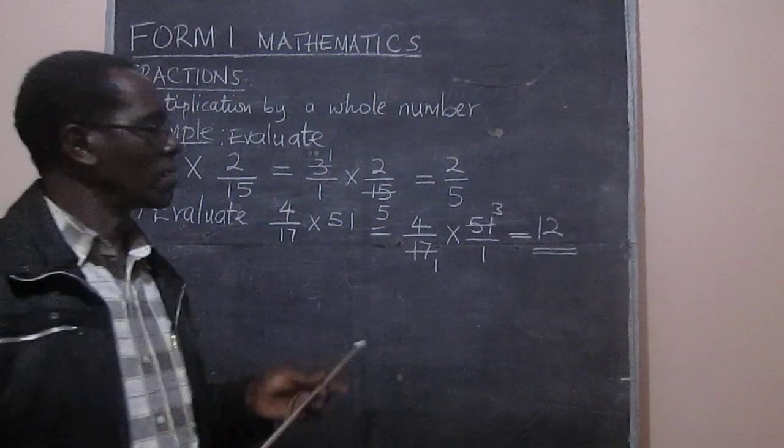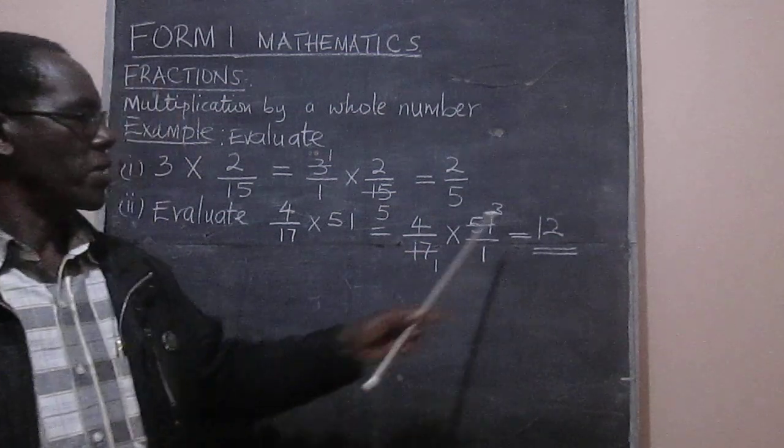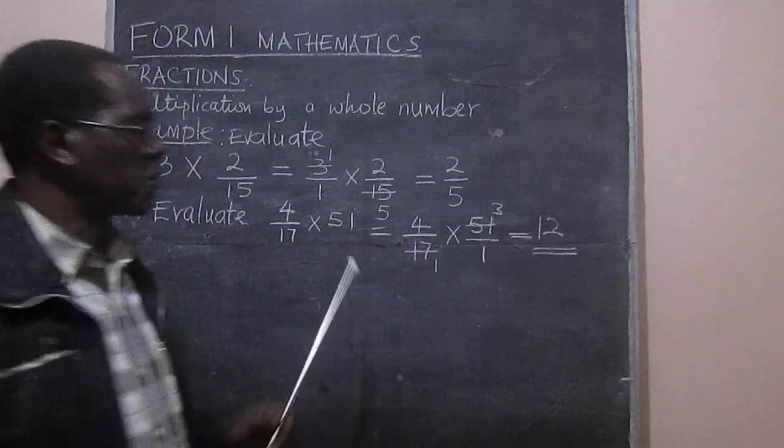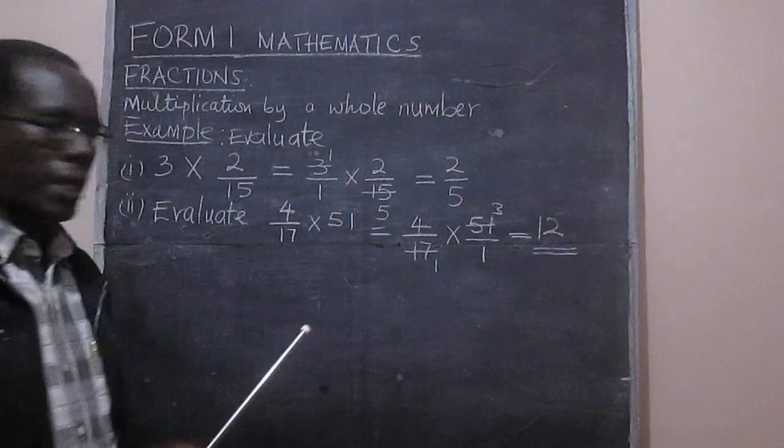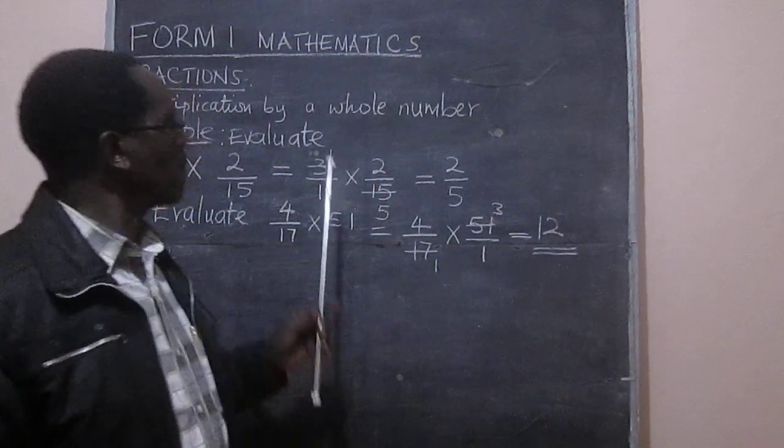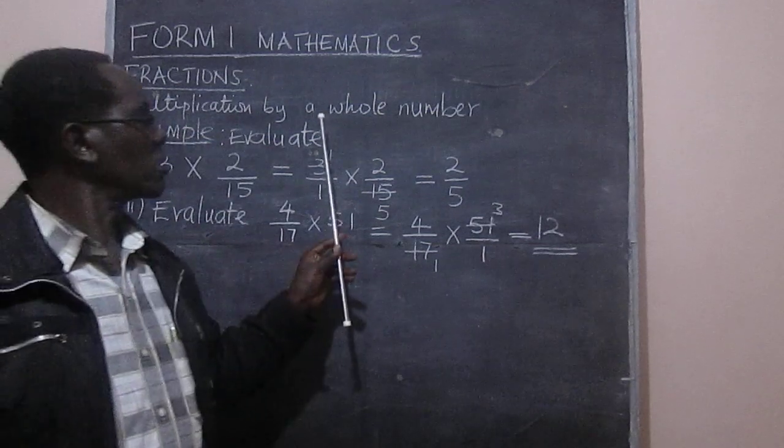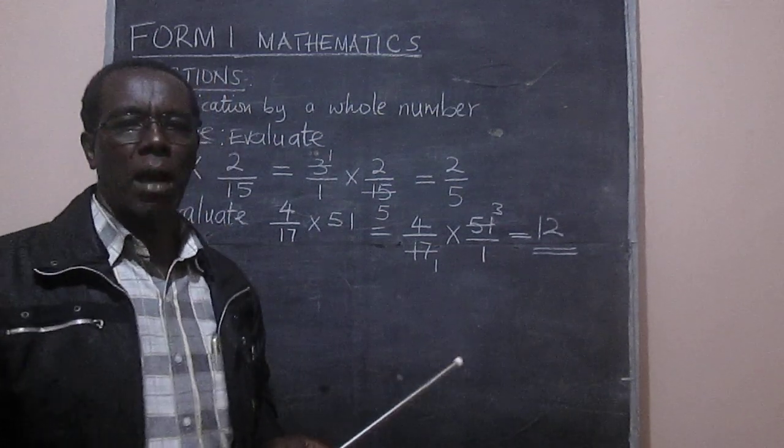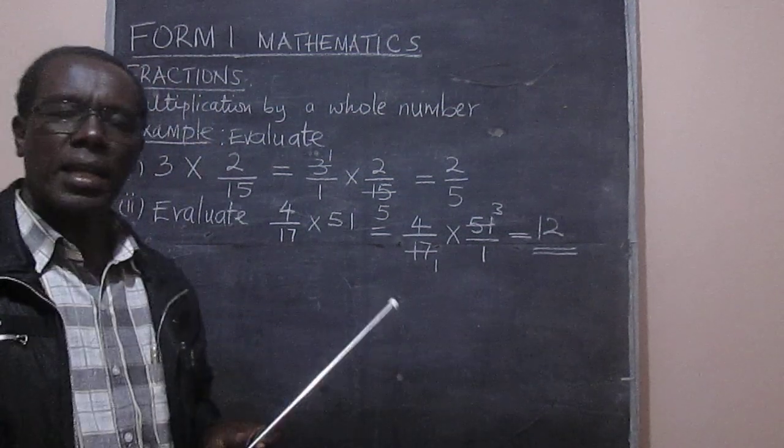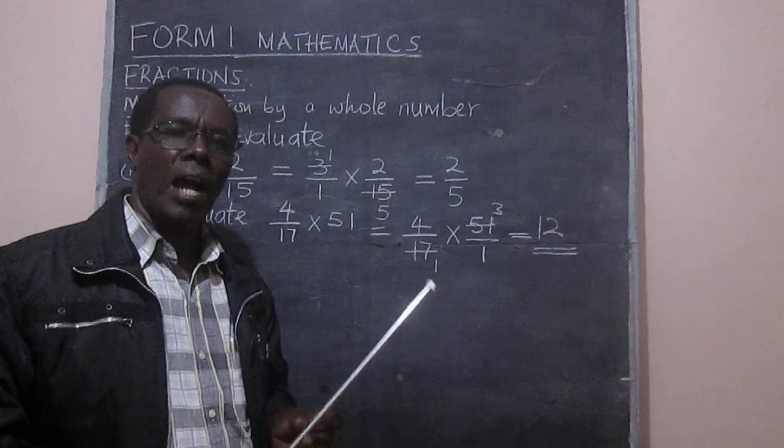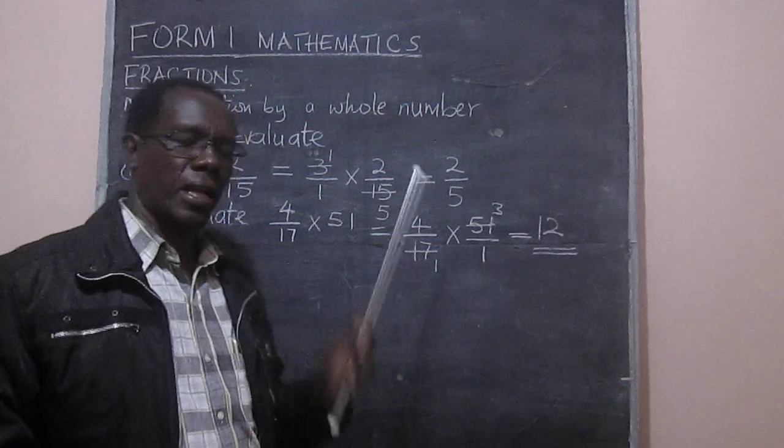And therefore the answer to our question there is 12. That's 12. Okay. That's good enough for multiplication of a fraction by a whole number. Let us now see how we can multiply a fraction by another fraction.